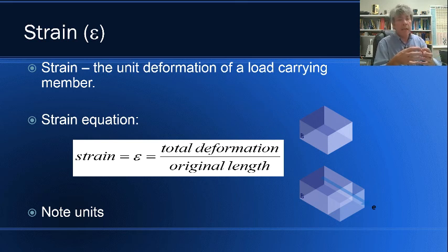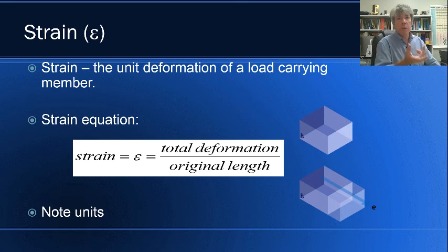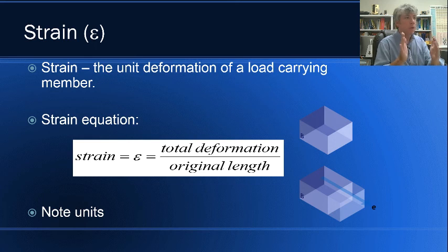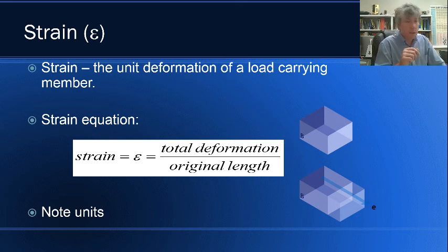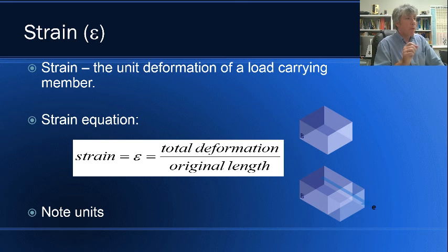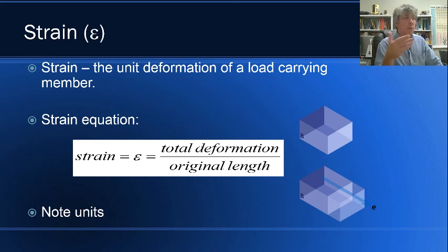If you think of a square block of rubber and you stretch it and want to know the strain, all you have to do is measure the original length and measure the deformation — not the total new length, but just the change in length. That deformation over the original length is strain. We give it the symbol epsilon. Sigma is used for normal stress, so we use epsilon to indicate strain. Notice that strain is a dimensionless quantity since deformation and original length both have units of length.